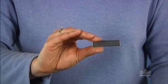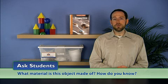Hold up a metal sample and ask students to find a similar object on their trays. Ask, what material is this object made of? How do you know? Students should say that the object is made of metal because it is shiny, hard, silvery, and heavy.